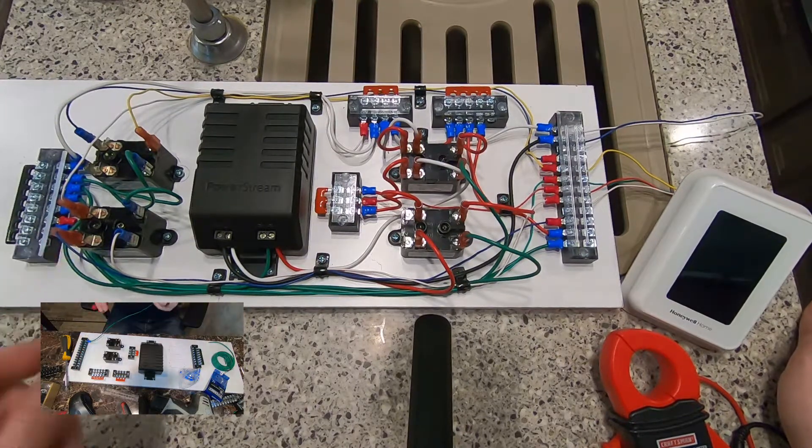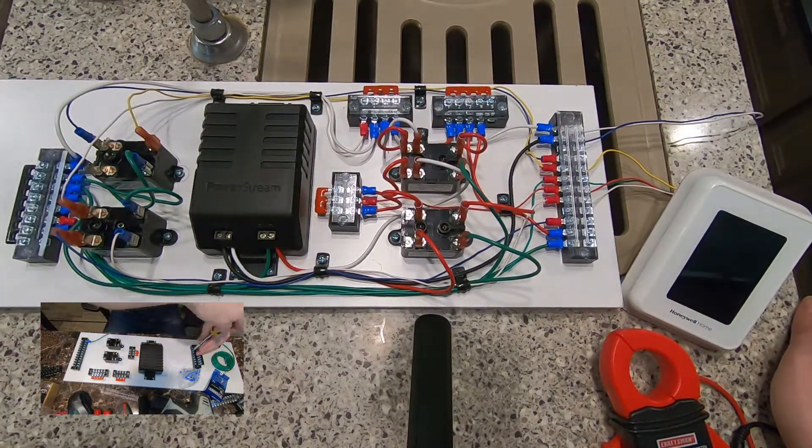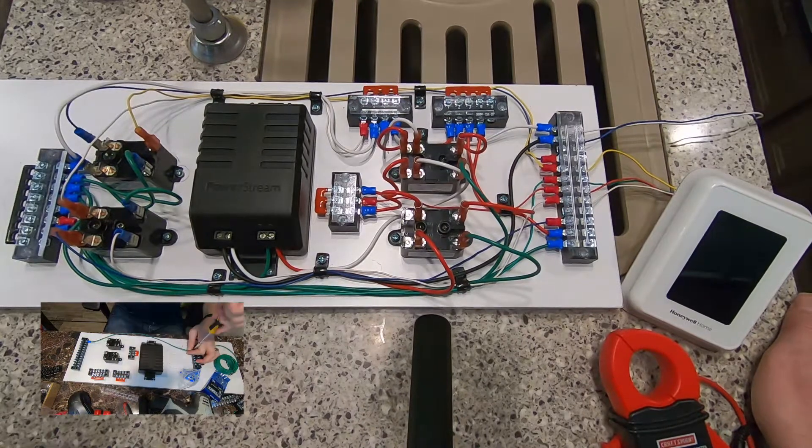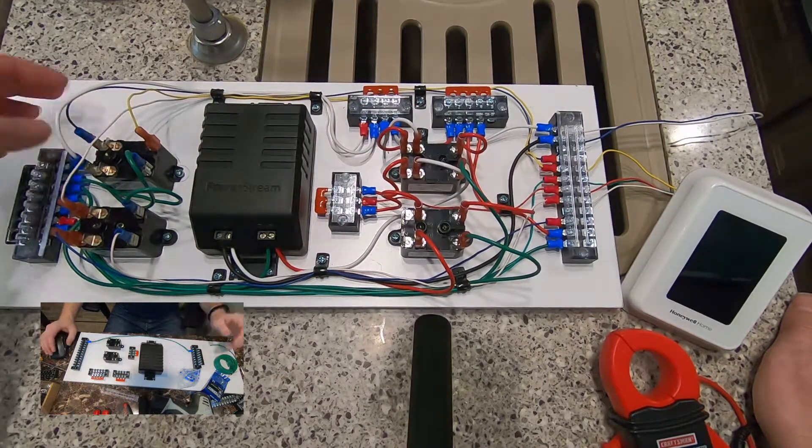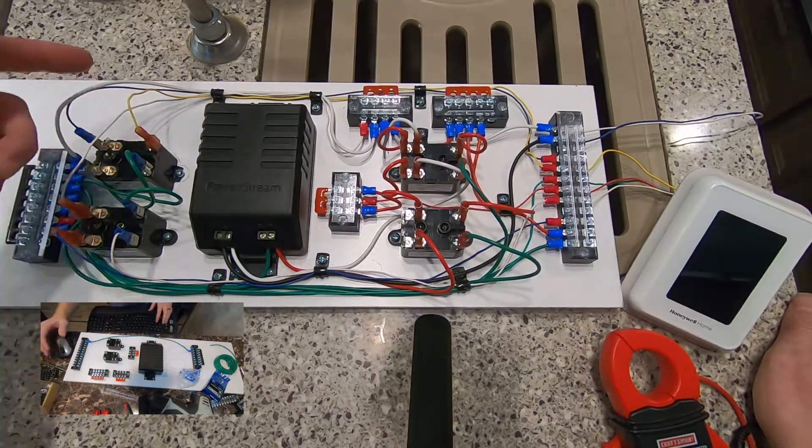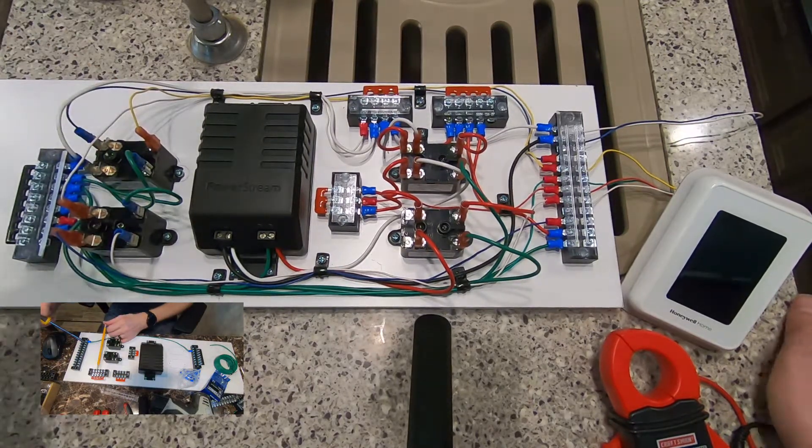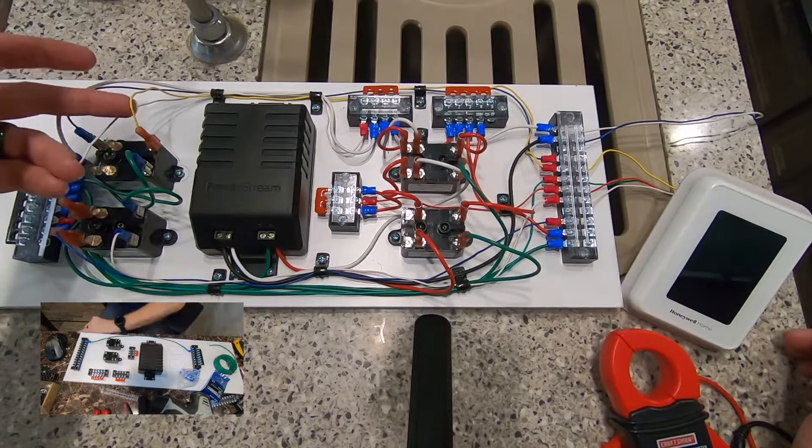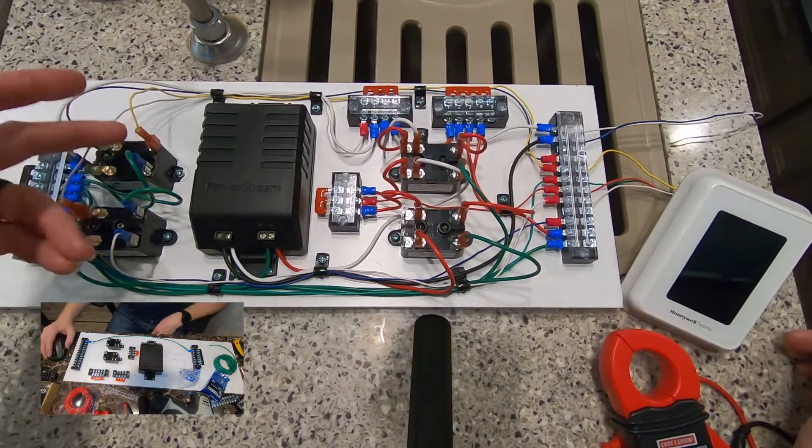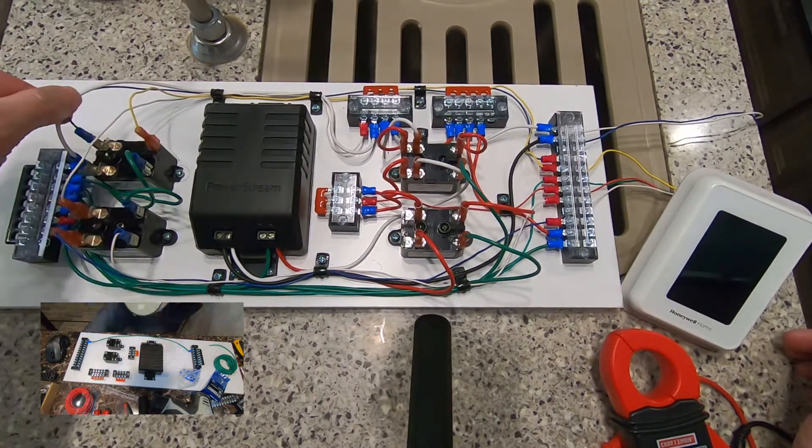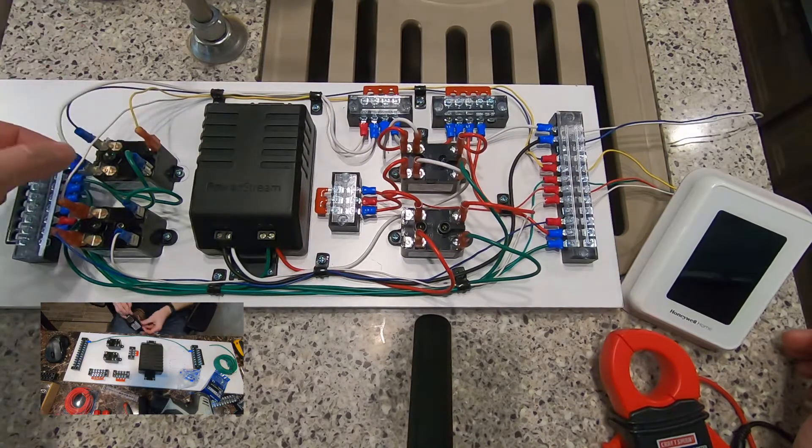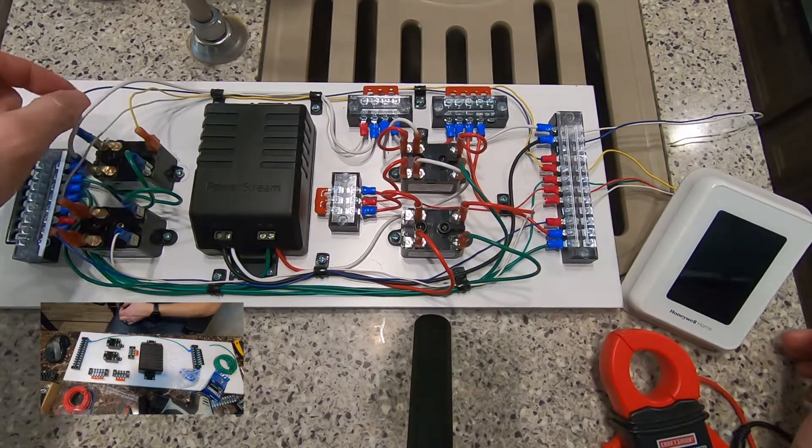For cooling we actually have another one and the yellow wire typically operates, there's a Y terminal on your thermostat, and so that's going to provide the 24 volts and energize these wires. So 12 volts is going to come in and then it runs back up to the 12 volt power for our Dometic CT thermostat.